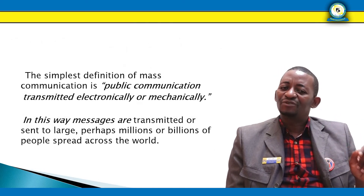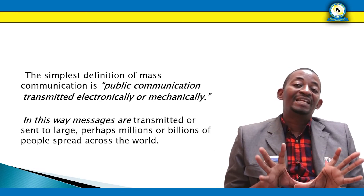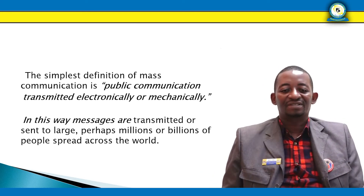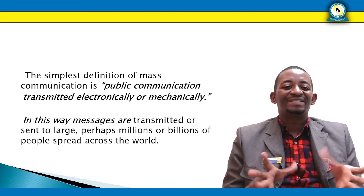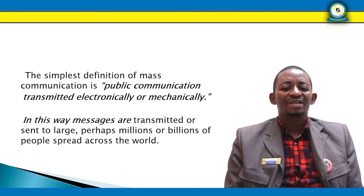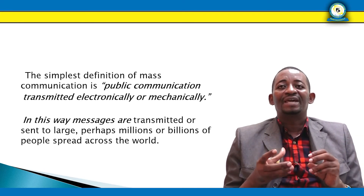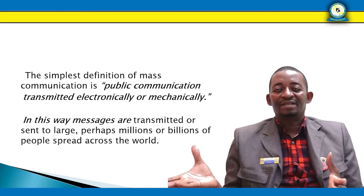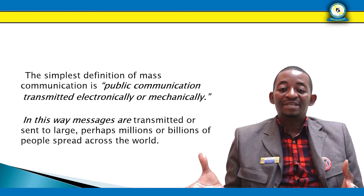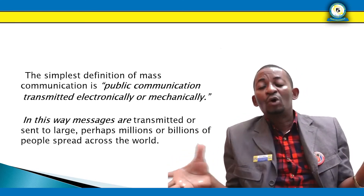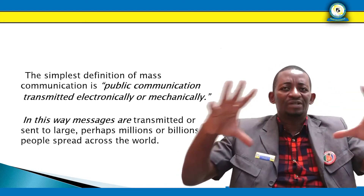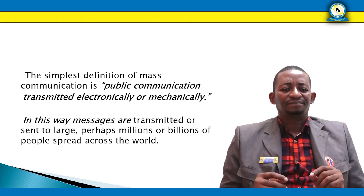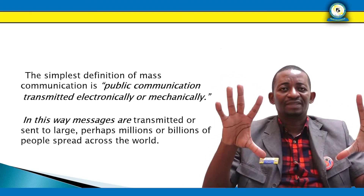The simplest definition of mass communication is public communication that is transmitted electronically or mechanically. Electronically refers to television and internet sources; mechanically refers to metropolitan newspapers, print adverts, etc. Mass communication can be transmitted using electronic or mechanical ways. Messages are transmitted or sent to perhaps millions or billions of people spread across the world. You're communicating a message to people you don't even know — anonymous — and the message goes global. That is mass communication.